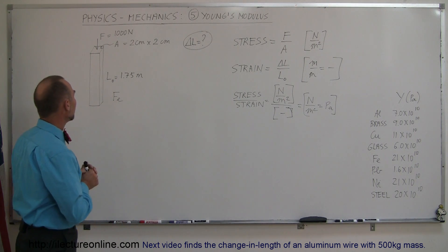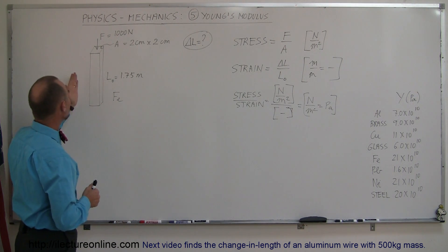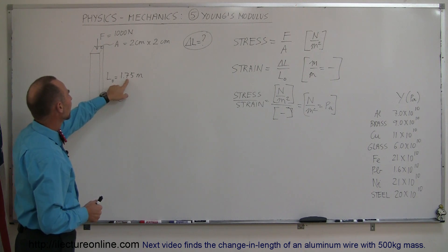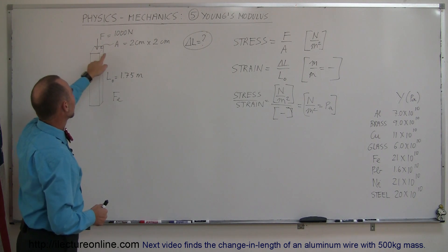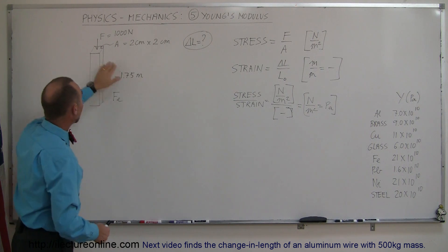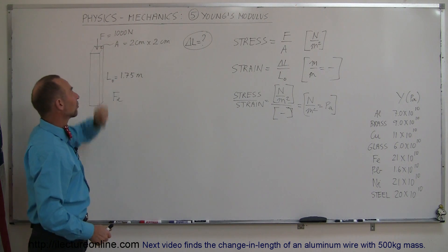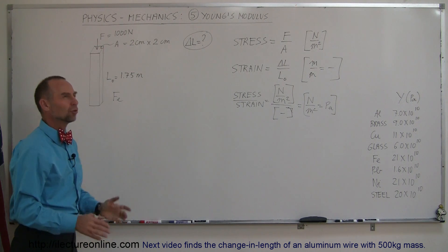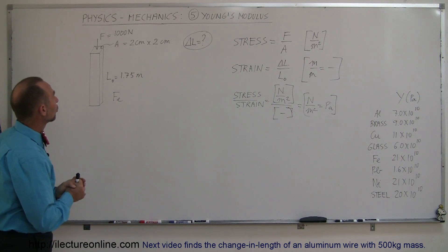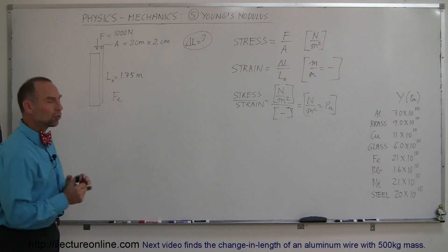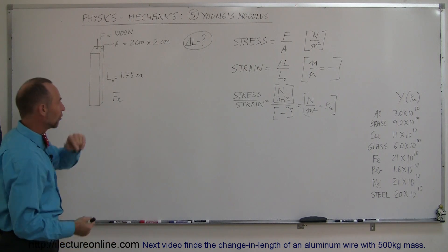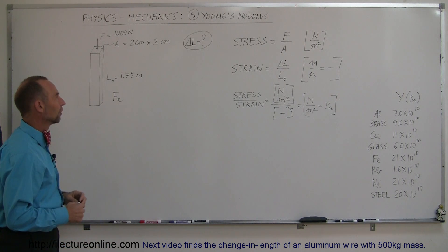All right, now let's do our problem. We have a beam made of iron. The original length is 1.75 meters, the cross-sectional area is 2 centimeters by 2 centimeters, and the force we're applying is 1,000 Newtons — roughly about 200 pounds. So how much will that beam shrink in size? How much will it be deformed under that kind of force?